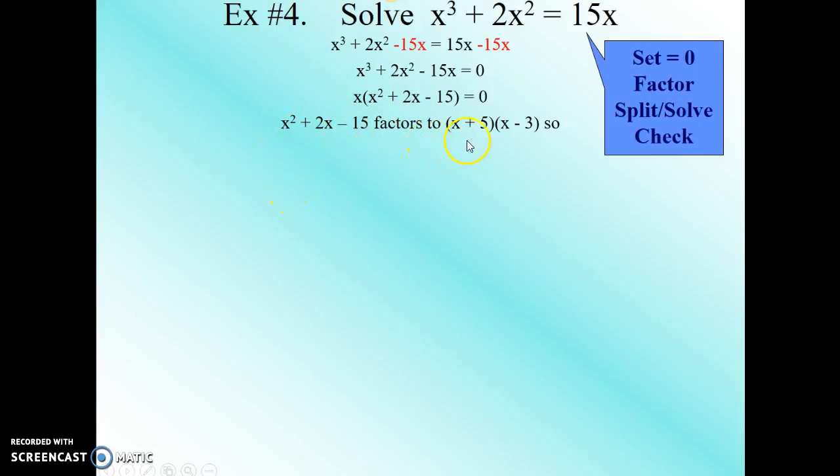When we do that, we find that the factors are x plus 5 times x minus 3, because negative 3 times 5 is negative 15, and 5 minus 3 is positive 2. So now we have a completely factored equation: x times x plus 5 times x minus 3 equals 0. We'll set each factor equal to 0 and solve.